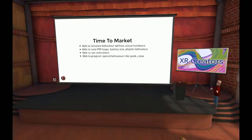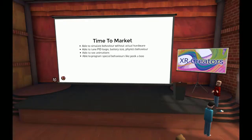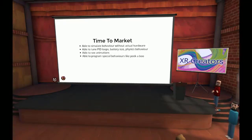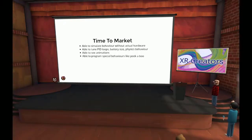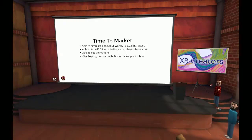They also had some special behaviors they wanted to simulate. In virtual reality, we simulated the ability for the drone to see your face by doing ray casts to your head, eyes, and mouth. So we could do behaviors like a peekaboo behavior — if you basically cover your face with your hands and reveal it, we would detect that and the drone would do this pirouette maneuver that they wanted.